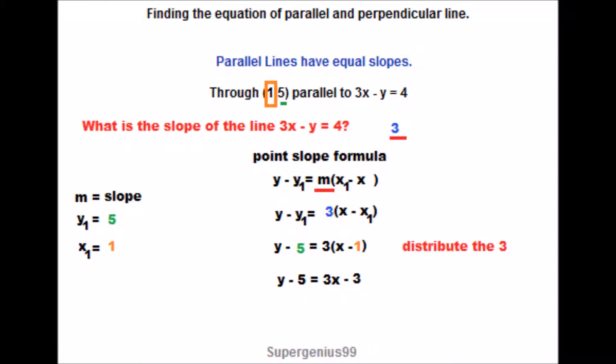And then next we need to get the y by itself. Since it's y minus 5, we need to do the opposite. What's the opposite of subtracting 5? Add 5 to both sides. And so on the left-hand side, the 5s will cancel, because minus 5 plus 5 is just 0. And then on the right-hand side, what is negative 3 plus 5? It's 2. So then that's our answer.